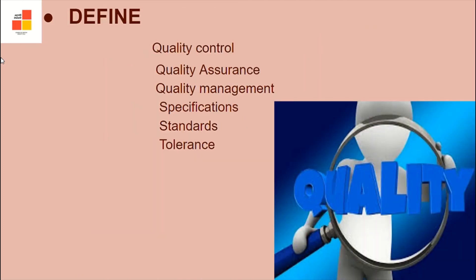Let's define quality control — the process of problem solving for achieving zero defect in a product. Quality assurance is the process of prevention of problems in management. Quality management is the process of implementation and monitoring of a quality system, for example TQM — Total Quality Management. Specifications are characteristics of products required or desired by consumers, for example measurements. Standards are characteristics of a product — for example, certified figures given by standardized and recognized international agencies, like color fastness of material. Tolerance refers to the limits to which the standards can be varied and is acceptable to the consumer.